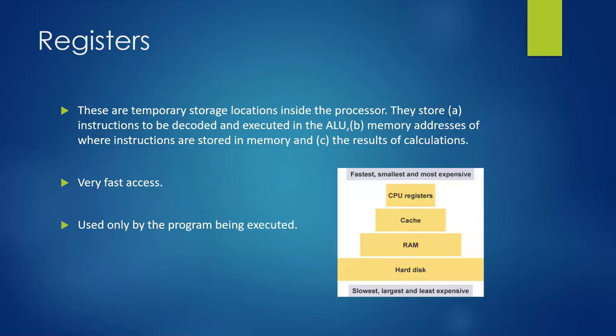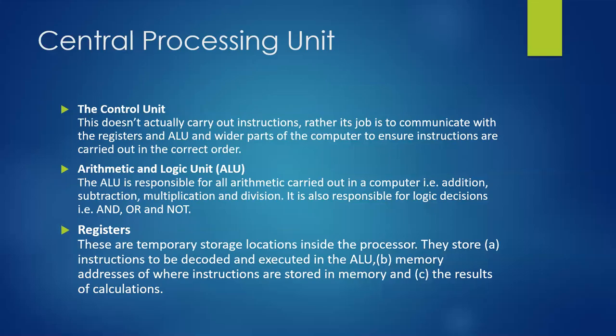And lastly, we have the registers, temporary storage locations actually inside the CPU. They can store instructions that are going to be executed, addresses of memory locations where instructions are stored, and possibly results of calculations. Very fast. Going from a hard disk, random access memory, cache memory, and the CPU registers, they are the fastest access memory. So I'm going to leave this slide on the screen just for a moment, because this contains the three classic definitions. And if you were studying for an exam or creating study cards or notes, this would be the definitions that you would have to learn for each of those three areas.